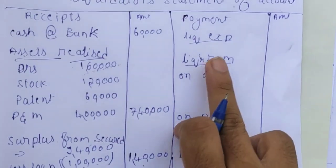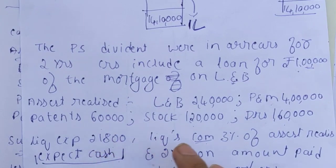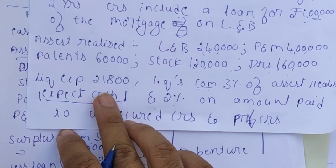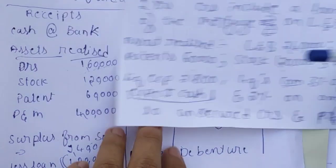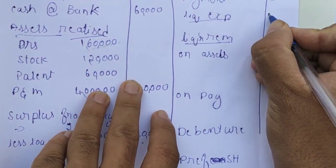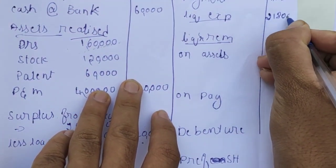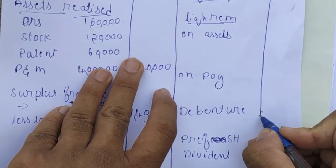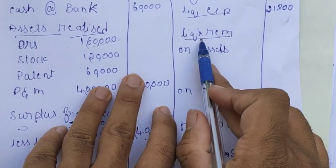On the payment side, the first item is liquidation expenses. Liquidation expenses amount to Rs.21,800.